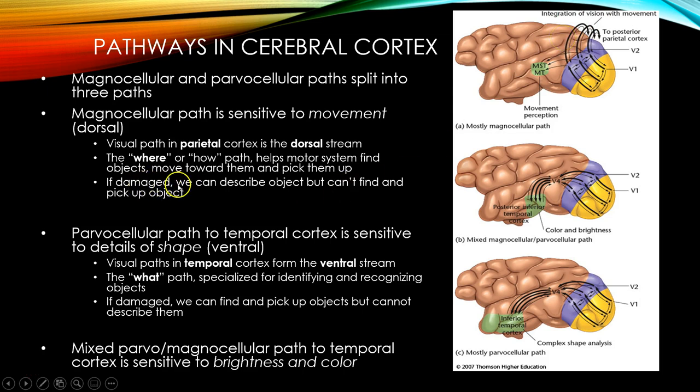If the where pathway is damaged, individuals can describe an object — they can see it, they can tell you this is my cell phone, it's a rectangle, the case is purple. But they can't pick it up. If they go to try to pick it up, they miss it — they either reach too short, or their reach is too long, maybe hitting the table, or it's off to the right or to the left. They can't locate where that object is in space. That's the where pathway.